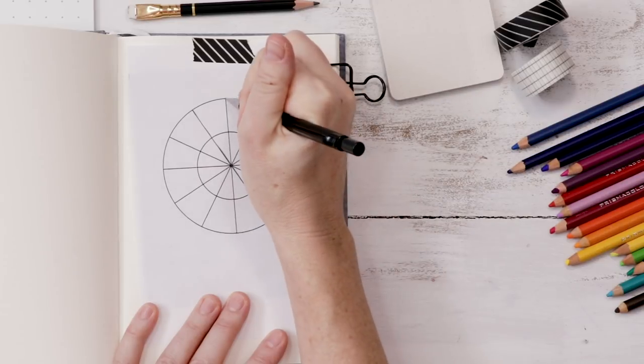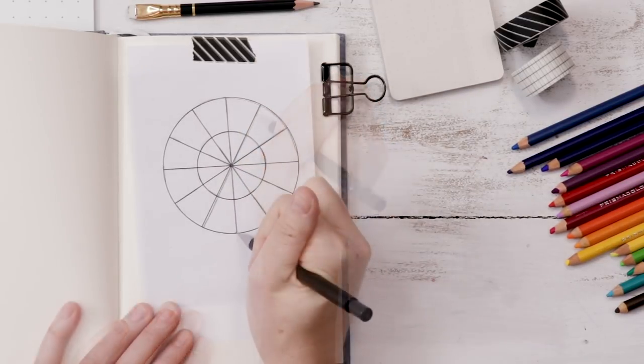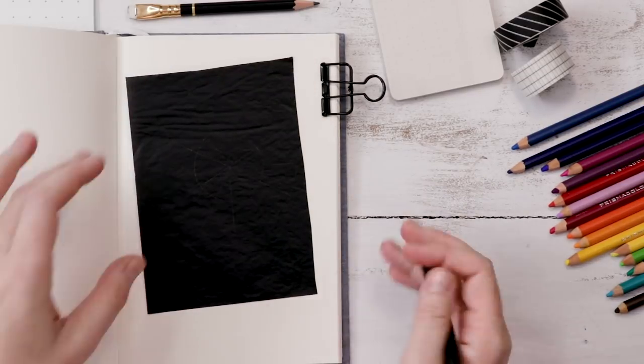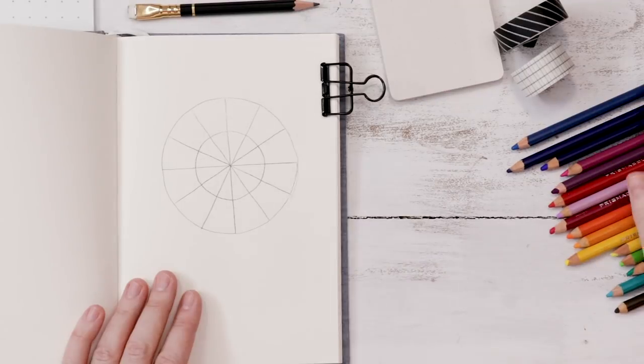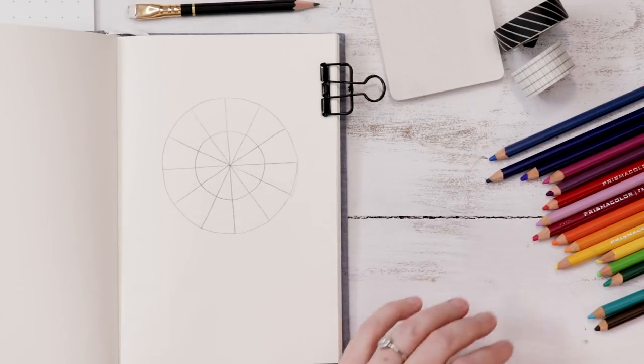We can have a nice organic journal page without any paper stuck in, but I do want a kind of perfect wheel. So use a sharp pencil, go over that, lift up, and it should look similar to this. The first thing we're going to do is begin by coloring our wheel in with the primary colors.